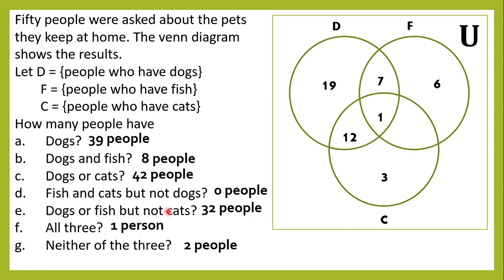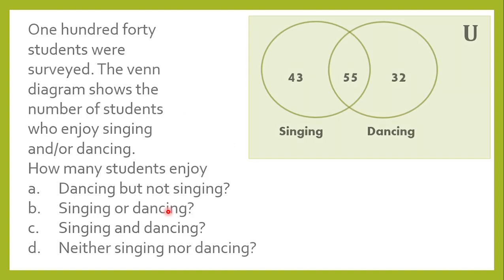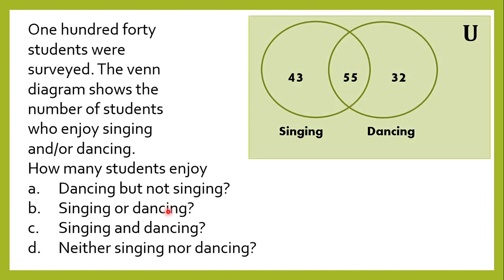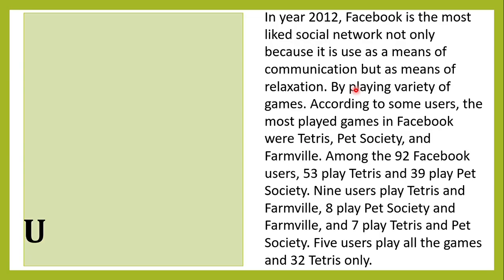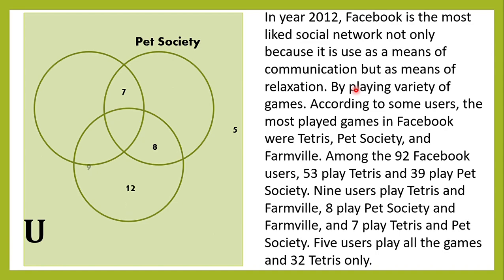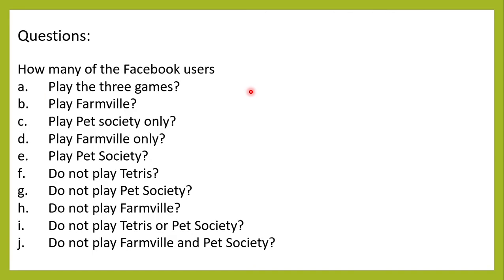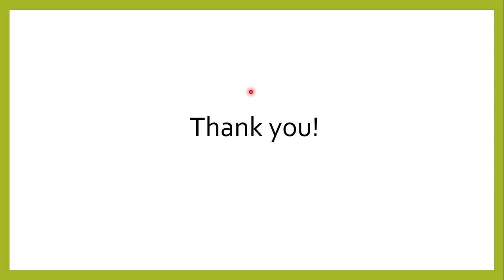That concludes our examples for two-set and three-set Venn Diagrams. Here is your assignment — two items. The first one has the Venn Diagram already given, and the second item follows. Kindly pause the video to answer, and do not forget to upload your answers on our LMS. Thank you.